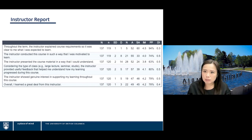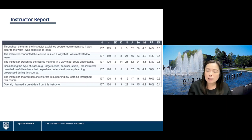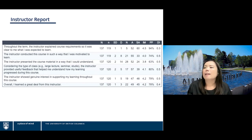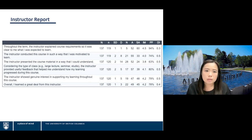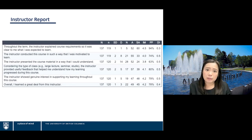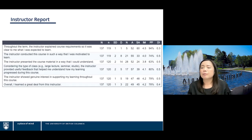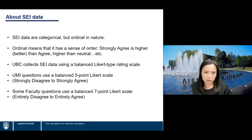The six questions shown are ones we started asking since Winter 2021. Prior to that, UBC Vancouver had a different set of six questions, and UBC Okanagan had another set for their campus. In Winter 2021, we sub-aligned the university questions for both campuses, so all instructors are now asked the same set. Depending on the faculty, your department may have additional questions. Today's workshop primarily focuses on the UMI questions.